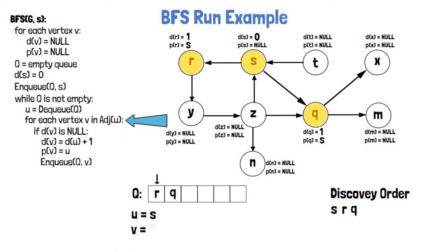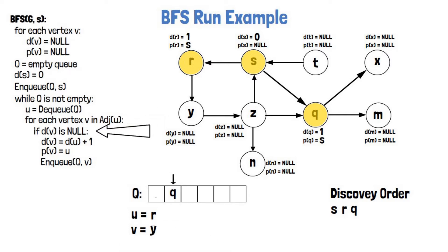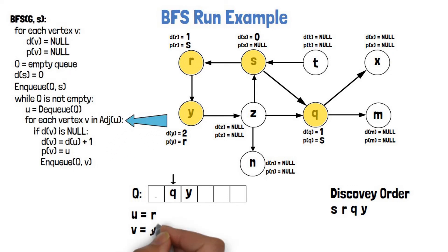There are no more neighbors for S, so we go back to the while condition and enter again since the queue is not empty. R is the next one dequeued. It has only one neighbor, Y. Y was not yet discovered, so we mark it, update its distance to R's distance plus 1, which is 2, and set its parent to R as the vertex that discovered it. We add Y to the queue. R has no more neighbors, so we start a new iteration of the while loop, now with vertex Q.